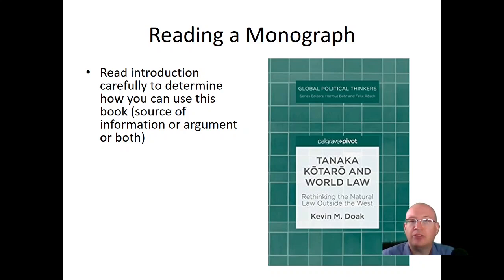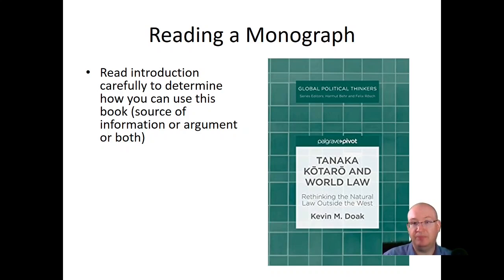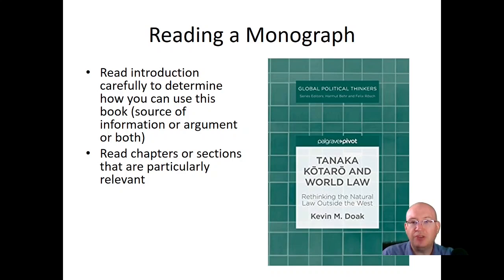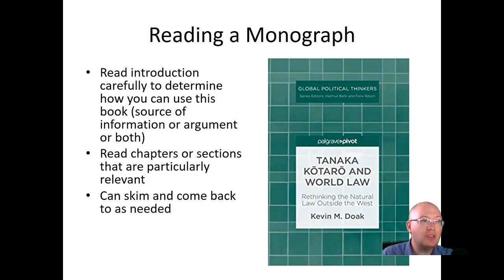Typically there are two ways you'll use a monograph in your paper: one is as a source of information — just facts. The other is for an argument — either to build upon it or to disagree with it. My goal is never to make students waste time. Read the introduction carefully to figure out what the book is arguing, and that will tell you which parts of the book you need to read. Don't read things that have nothing to do with your question. It's important to have a clear idea of your paper topic so you can use your time efficiently rather than reading books page by page.